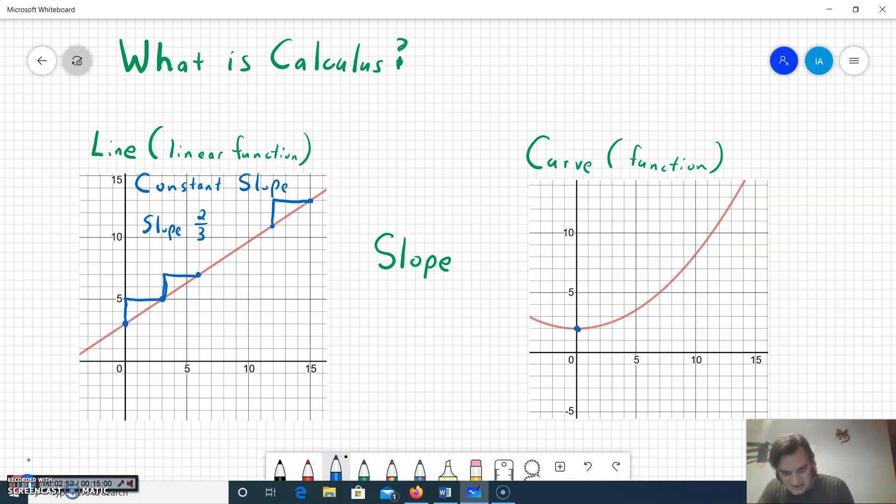If I come right here and use the point 0, 2 and I try and go over 3, 1, 2, 3, it looks like I go up maybe about a half and then go over 3, so my rise over run is a pretty small number.